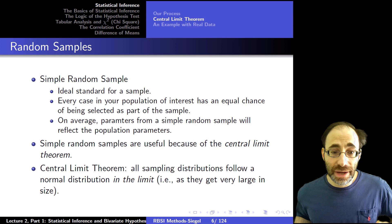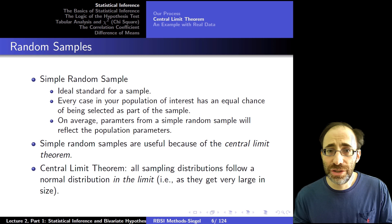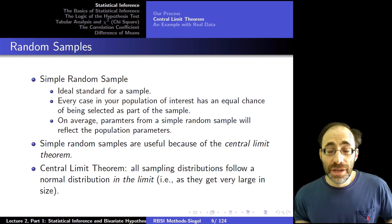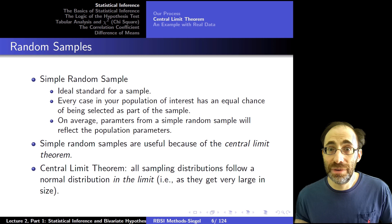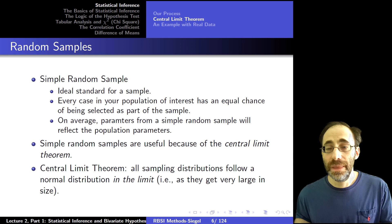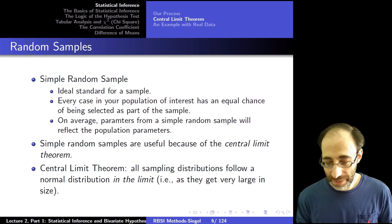Simple random samples are also useful because of what's called the central limit theorem — a key theorem in statistics that underlies a lot of what we're going to do. In short, the central limit theorem says that all sampling distributions follow a normal distribution, a bell curve, in the limit as they get very big in size. As the number of units in the sample gets large, they tend to follow a normal distribution. We haven't yet defined 'sampling distribution,' so that's what we're going to fill in now.